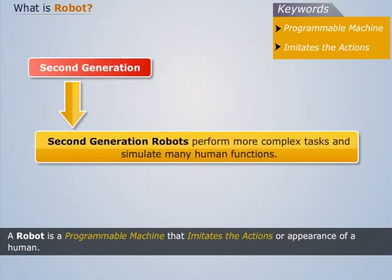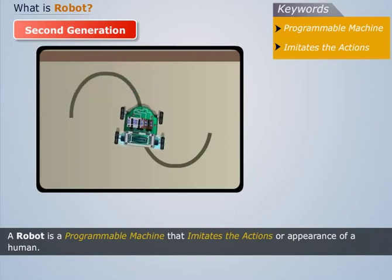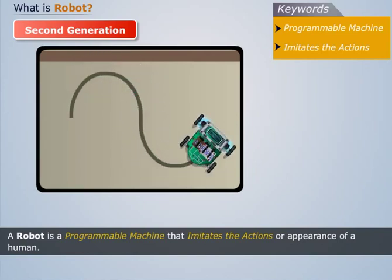Second generation robots perform more complex tasks and simulate many human functions. Such robots move, sense surroundings and respond to changes in their environment. For example, line-following robot follows a line and doesn't move ahead when the line is finished.